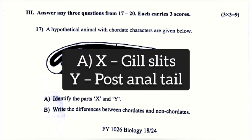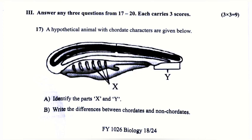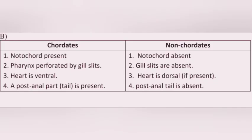Answer: Notochord present, pharynx perforated by gill slits, heart is ventral, a post-anal part is present.